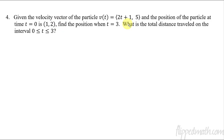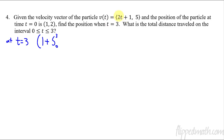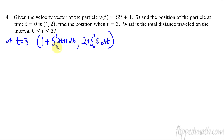For the next problem, we have a velocity vector and we want to find the position at t = 3, given initial position (1, 2) at t = 0. One approach: the position at t = 3 equals the initial x value 1 plus the integral from 0 to 3 of the x velocity component (2t + 1) dt, and the initial y value 2 plus the integral from 0 to 3 of the y velocity component (5) dt. Take the antiderivative, plug in 3, subtract the value at 0.